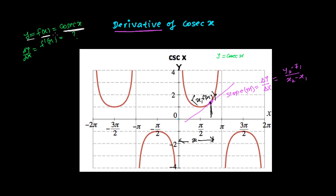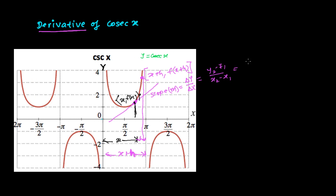When we put x we get cosec(x), when we put x₁ we get cosec(x₁). Similarly, a little away from this point — let's say h distance away — there is another point. That point has x-coordinate x+h, and its y-coordinate will be f(x+h).